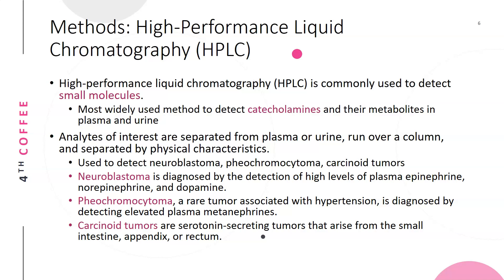High performance liquid chromatography (HPLC) is commonly used to detect small molecules. It is the most widely used method to detect the catecholamines — epinephrine, norepinephrine, and dopamine — and their metabolites HMA and VMA in plasma and urine. Analytes are separated from plasma and urine by running them over a column, separated by physical characteristics depending on the column type. HPLC is used to detect neuroblastoma, pheochromocytoma, and carcinoid tumors. Neuroblastoma is diagnosed by detection of high plasma levels of epinephrine, norepinephrine, and dopamine.